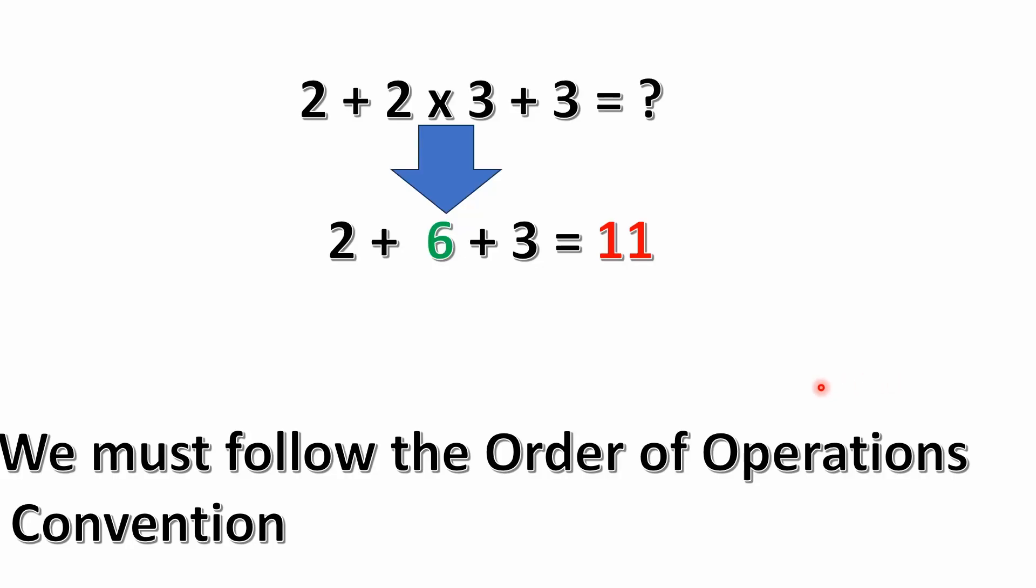And yeah, that's really the whole problem. You could replace that multiplication, you have 2 times 3. You could replace 2 times 3 with 3 plus 3, which would have given us 2 plus 3 plus 3 plus 3. Still would be 11.